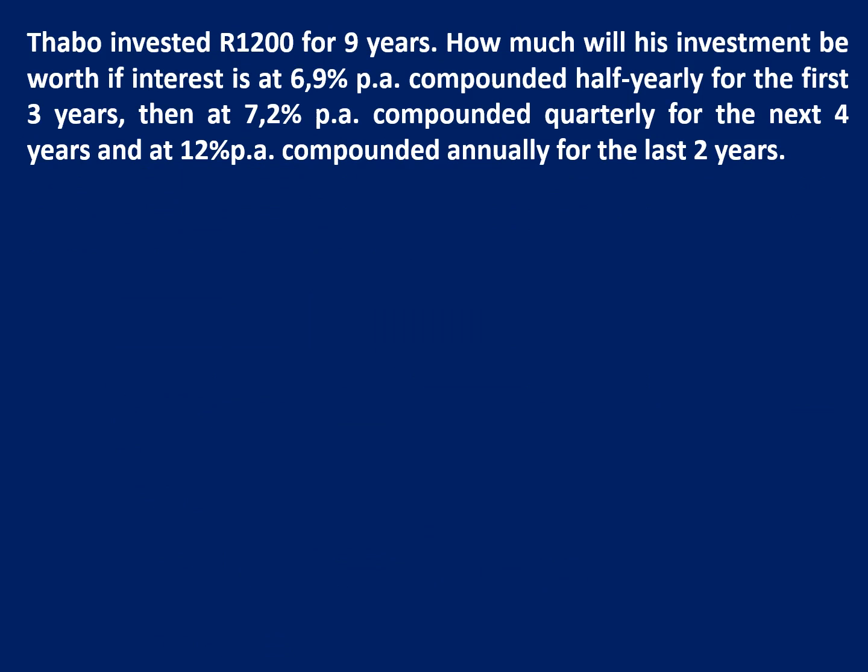Let's try one more. So Thabo invested R1,200 for nine years. First of all he's going to earn 6.9% per annum compounded half yearly for the first three years. Then 7.2% compounded quarterly for the next four years. And 12% compounded annually for the last two years.